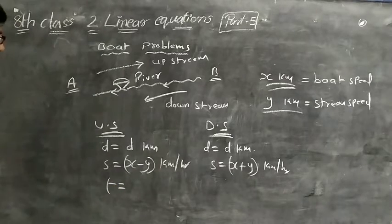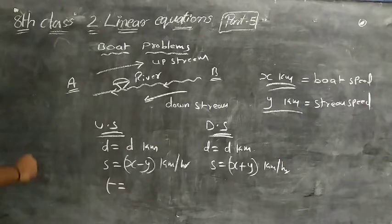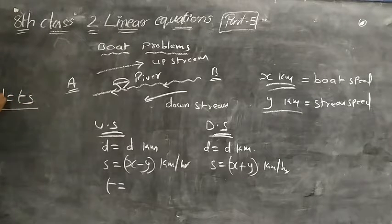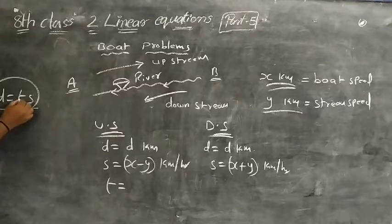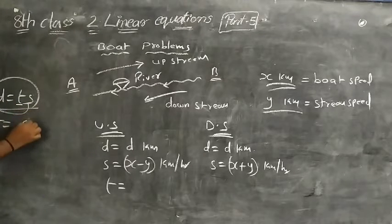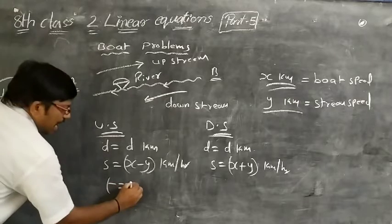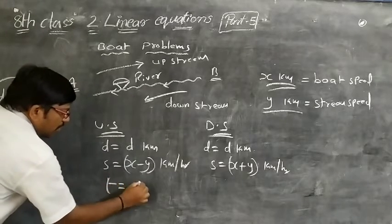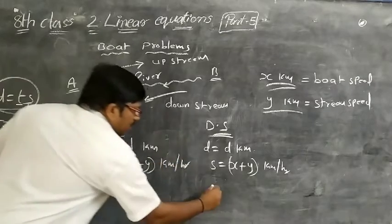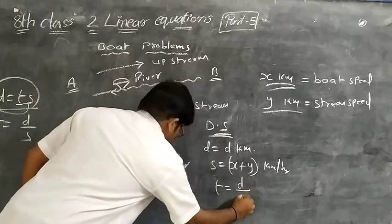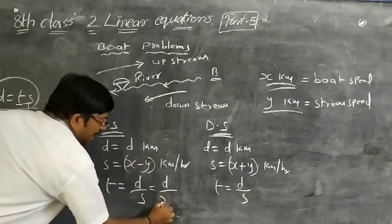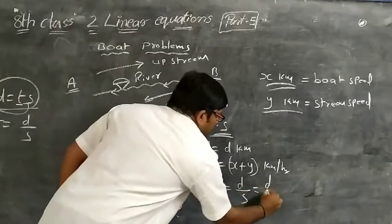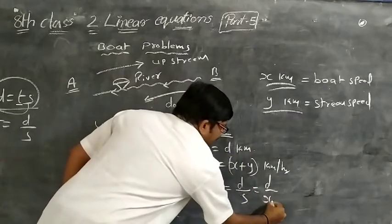Now the time formula: distance D equals time multiplied by speed, so T equals D divided by speed. In upstream, time T equals D divided by (X minus Y). In downstream, time T equals D divided by (X plus Y).